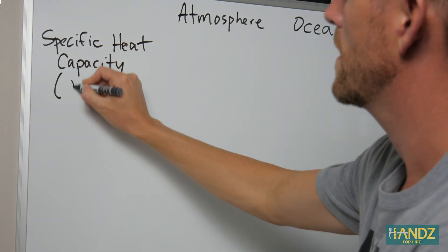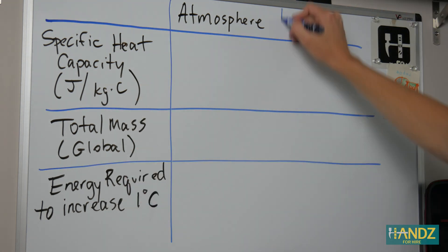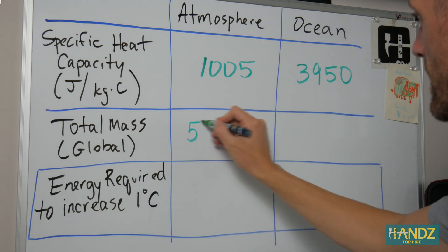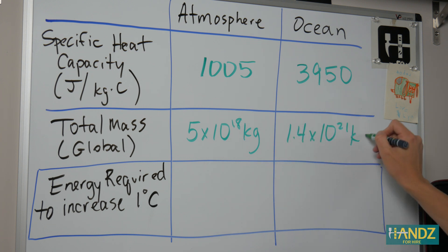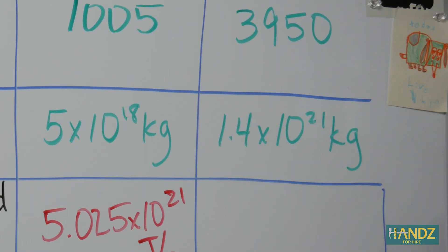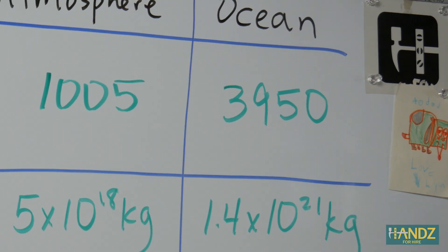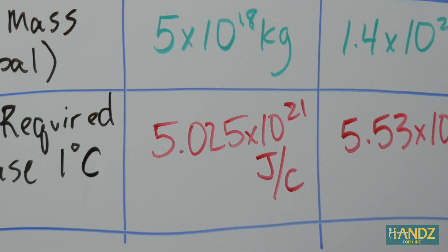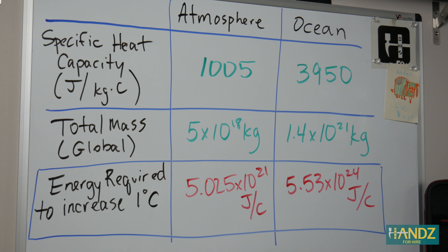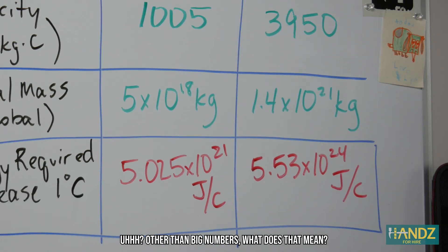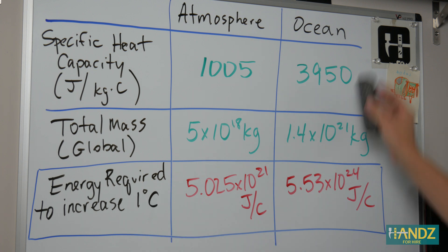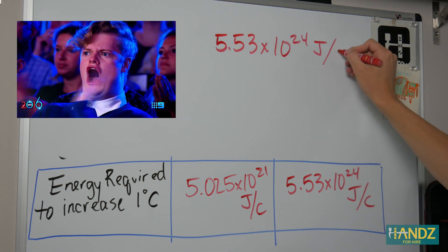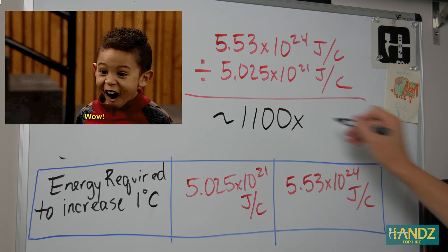When we compare the atmosphere and all the oceans, we can see that the atmosphere has a mass of 5 times 10 to the 18th kilograms, whereas the oceans have 1.4 times 10 to the 21st kilograms. The oceans are much, much more massive, but the oceans also have a much higher specific heat capacity, which means in order to change each by 1 degree Celsius, the atmosphere would need 5.025 times 10 to the 21st joules per Celsius, whereas oceans would need 5.53 times 10 to the 24th joules per Celsius. This just goes to show that a thousand times more energy would have to go into our oceans to raise them by 1 degree than would have to go into our atmosphere to raise it by 1 degree.